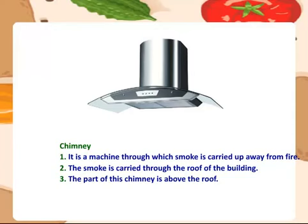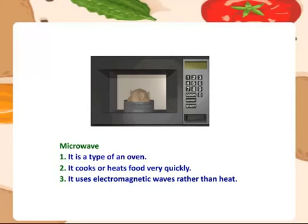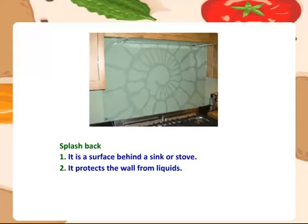The smoke is carried through the roof of the building. The part of this chimney is above the roof. Microwave — it is a type of an oven. It cooks or heats food very quickly. It uses electromagnetic waves for heating or cooking the food. Splash back — it is a surface behind a sink or stove. It protects the wall from liquids.